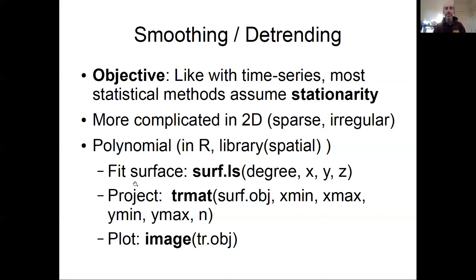So we fit that surface. The trmat function gives us our trend as a matrix. We take the object that comes out of the surface function, give it a bounding box and grid resolution.